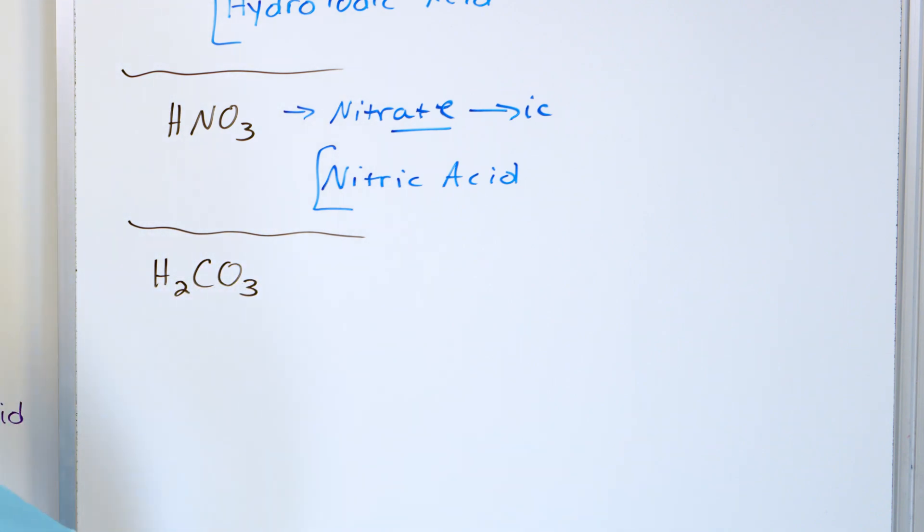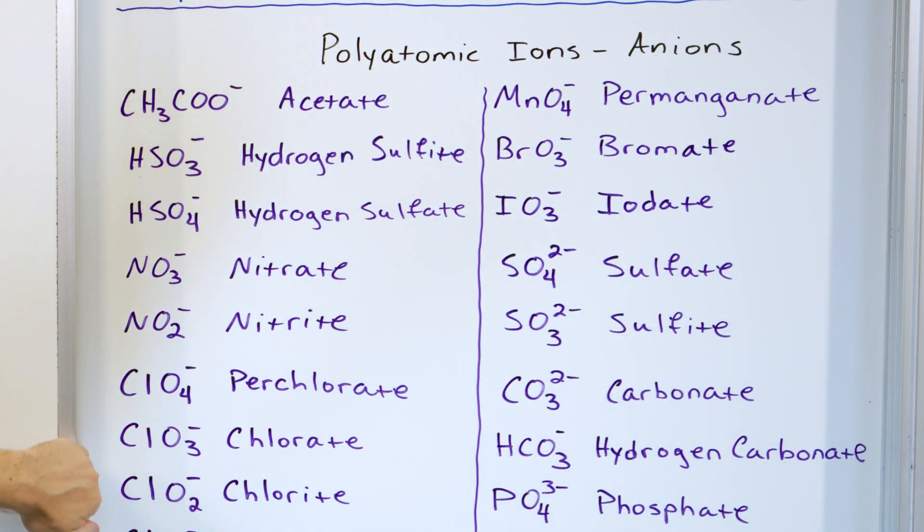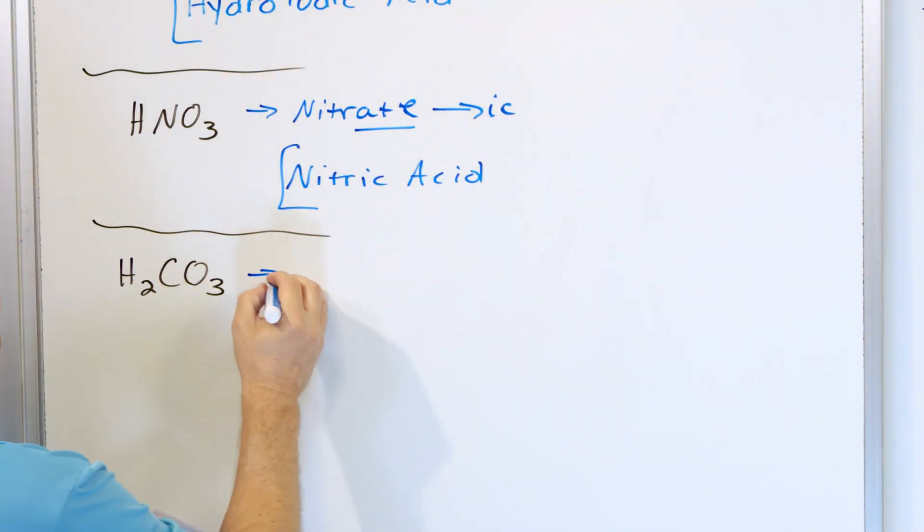What is the ion? Everything gets named on the ion. So CO3. CO3 is carbonate. So let's write down the ion, which is carbonate.